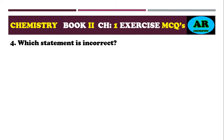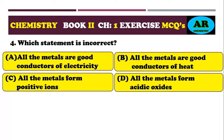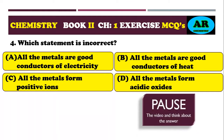MCQ number 4: which statement is incorrect? Option alpha: all metals are good conductors of electricity. Option beta: all metals are good conductors of heat. Option charlie: all metals form positive ions. Option delta: all metals form acidic oxides. The correct option is delta.